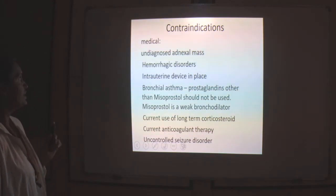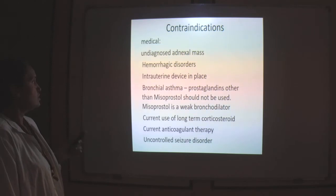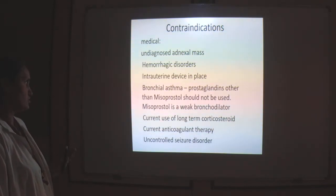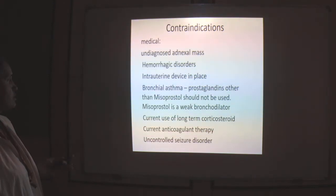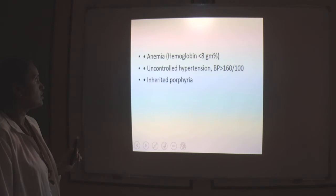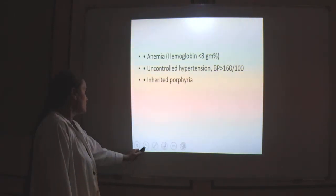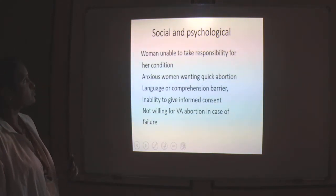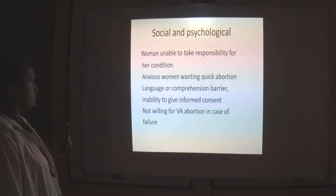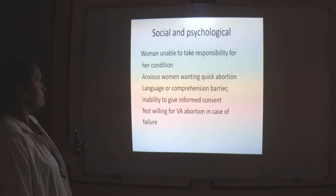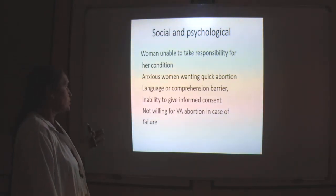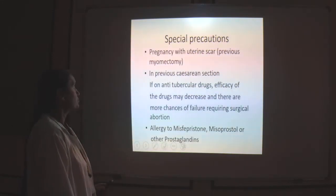Contraindications for medical abortion include: undiagnosed adnexal masses or suspected ectopic pregnancy, hemorrhagic disorders, an IUCD in place, bronchial asthma, prostaglandins other than misoprostol should not be used as misoprostol has a weaker bronchospastic reaction, current use of long-term corticosteroids, current anticoagulant therapy, and uncontrolled hypertension. Social and psychological contraindications include: a woman unable to take responsibility for her condition or not mentally stable, an anxious woman wanting a quick abortion, comprehension or language barriers where the healthcare provider is unable to counsel or take informed consent, or if she is not willing for vacuum aspiration in case of failure.